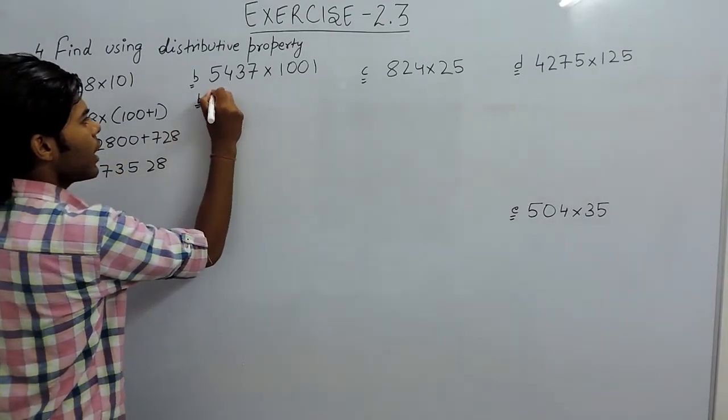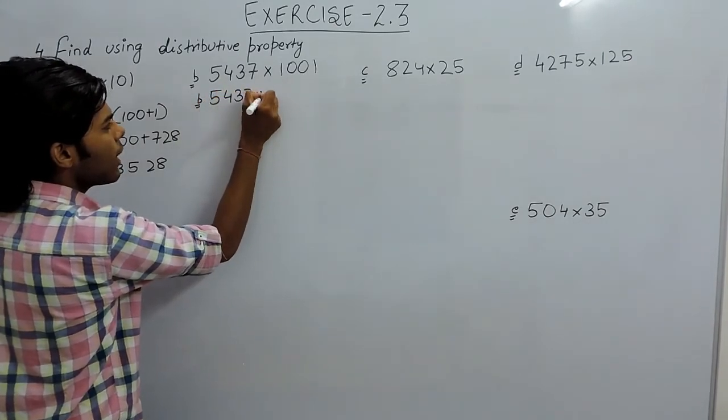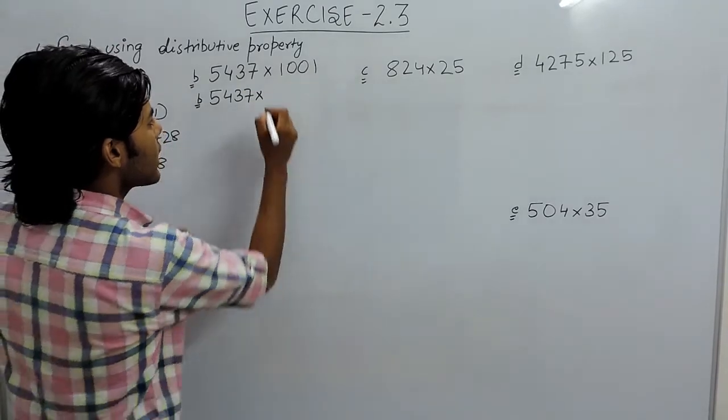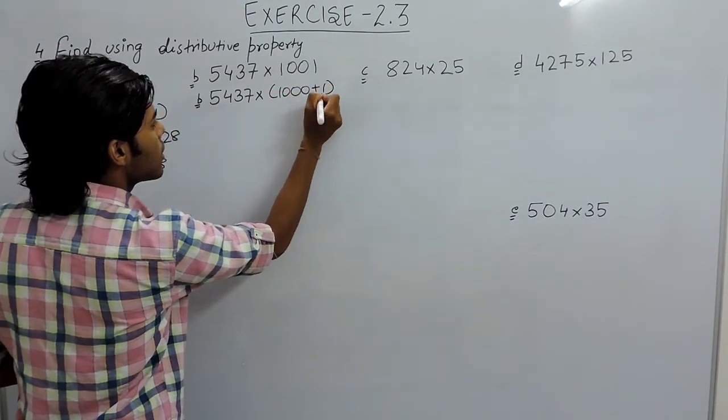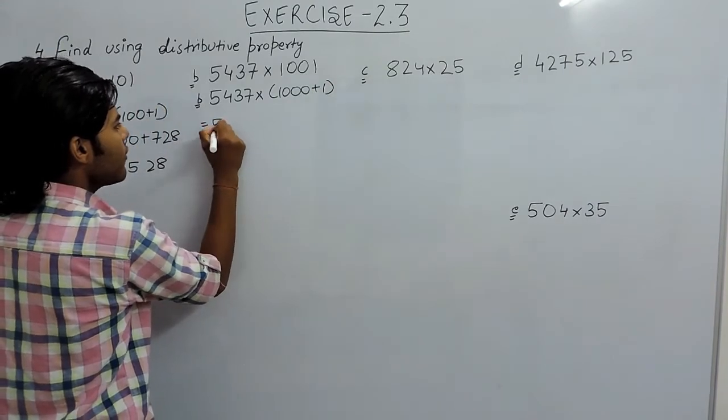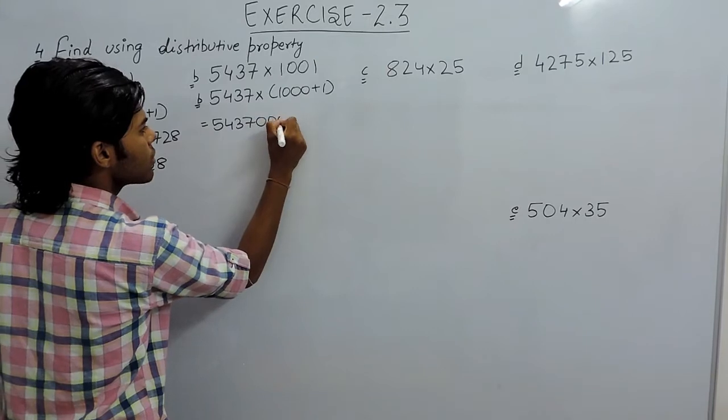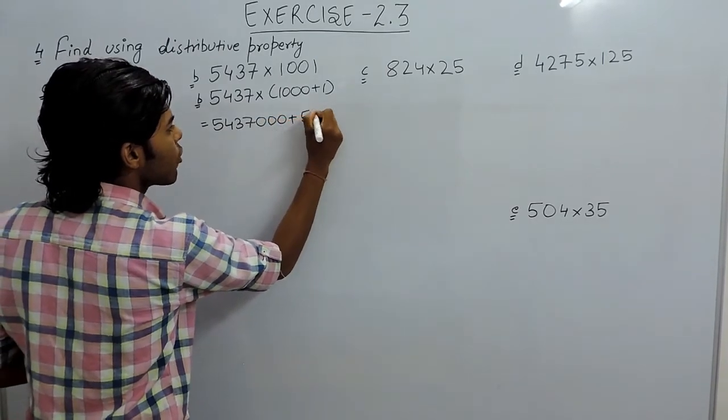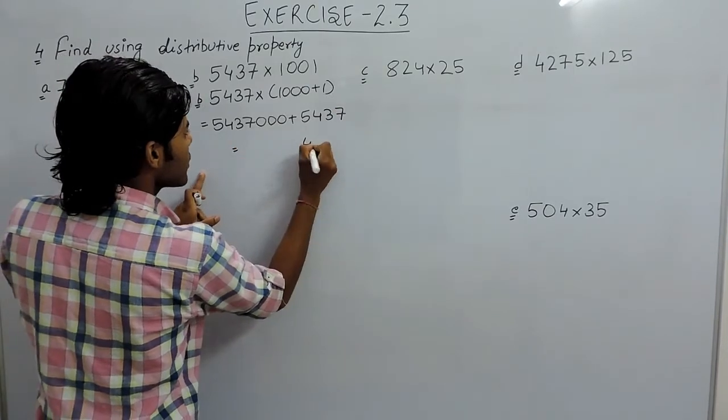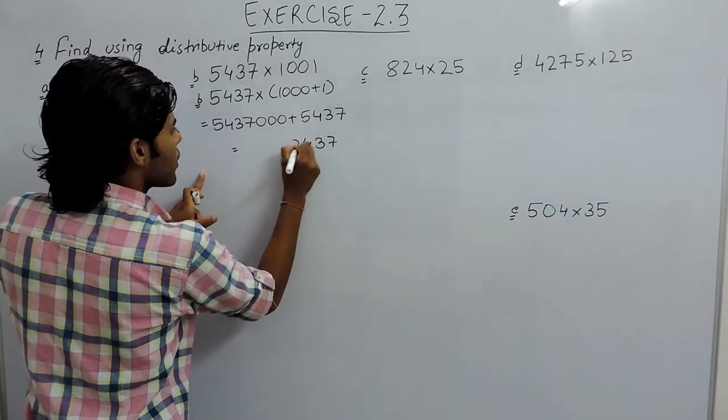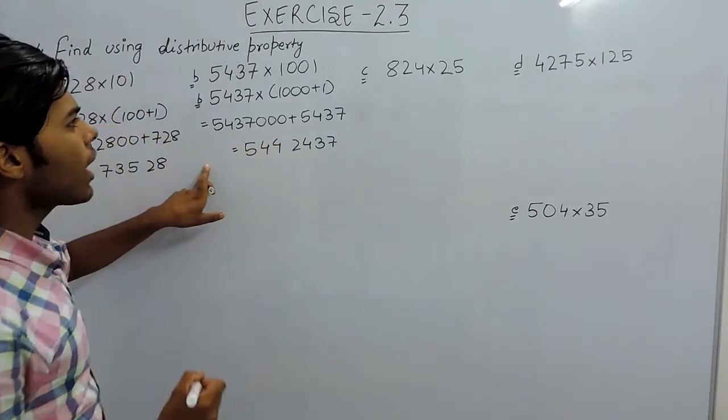In part B, it will be 5437 multiplied with 1001, which can be written as 1000 plus 1, so this will be 5437 triple 0 plus 5437. So in addition it will be... this is the required answer of part B.